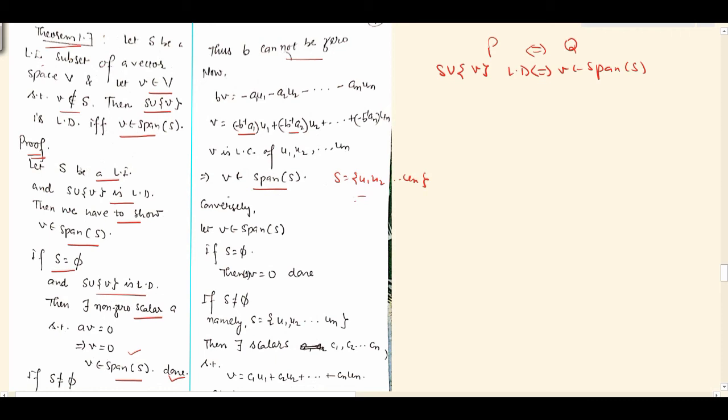Now for Q implies P. Conversely, this is a very easy part. Let v belong to span of S. If S equals Phi, then 1 into v equals 0, v is in span of S and S is Phi. Span of S for our convenience, span of Phi is equal to singleton 0. So this 0 can be written as 1 into v equals 0, where this v is 0. 1 into 0 equals 0. S union v is linearly dependent.